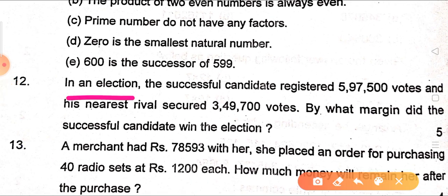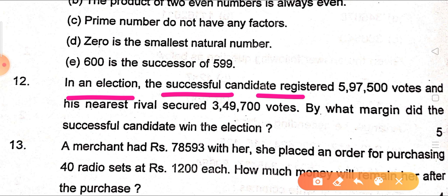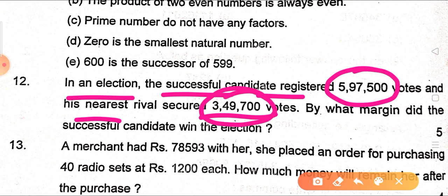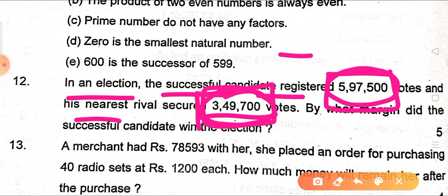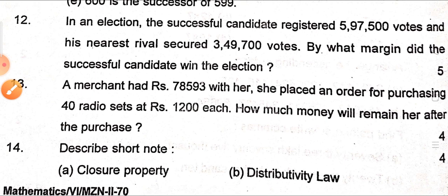Next question: In an election, the successful candidate registered 5,97,500 votes and his nearest rival secured 3,49,700 votes. By what margin did the successful candidate win the election? To find the margin, you subtract: 5,97,500 minus 3,49,700. Calculate the answer and tell me in the comment section.